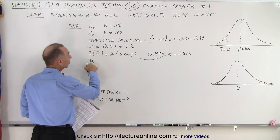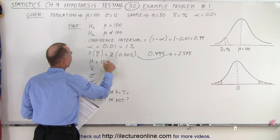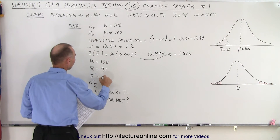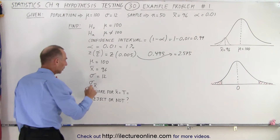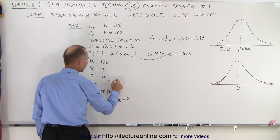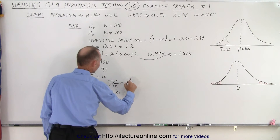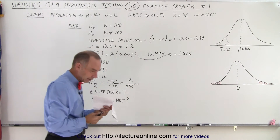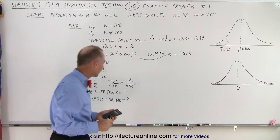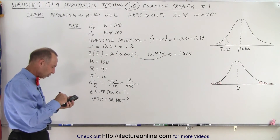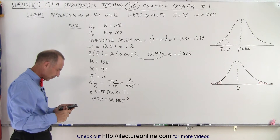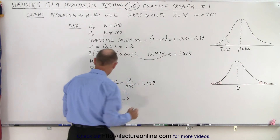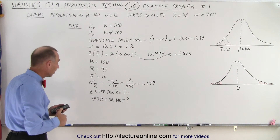The mean of the population — the average population — which we're given to be 100. The mean of the sample, which is 96. The standard deviation of the population, which is 12. And the standard deviation of the sample — by definition, that's equal to the standard deviation of the population divided by the square root of the sample size. So that's 12 divided by the square root of 50, which is 1.697. That's the standard deviation of the sample.